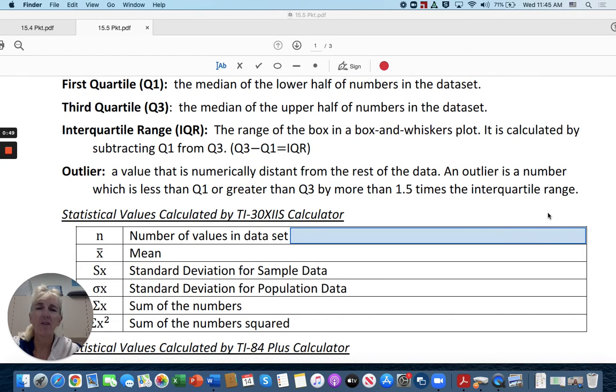And it's also helpful to know the spread of the data in your interquartile range. An outlier is a value that is numerically distant from the rest of the data. An outlier is a number which is less than quartile 1 or greater than quartile 3 by more than 1.5 times the interquartile range.